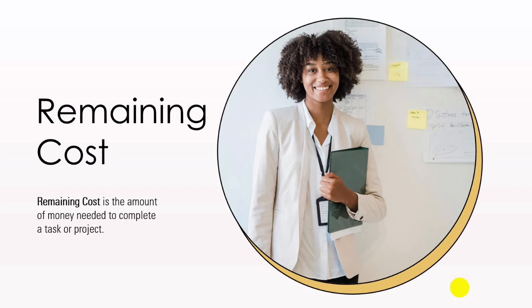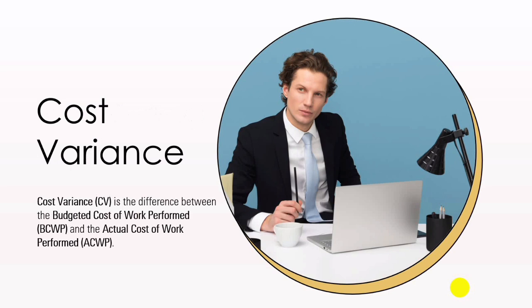Cost variance is the difference between the budgeted cost of work performed and the actual cost of work performed. It shows whether your project is under or over budget at a given point in time. The formula is BCWP minus ACWP. Let's see how this cost variance works in a moment.